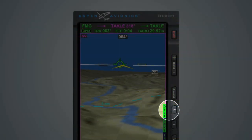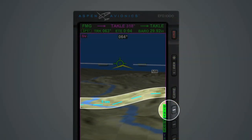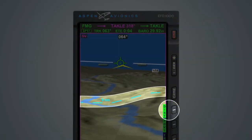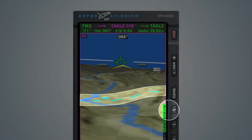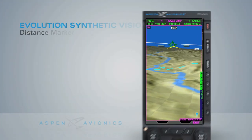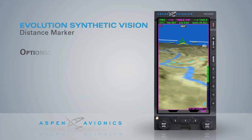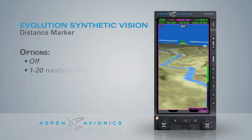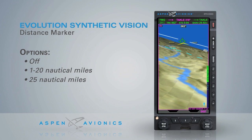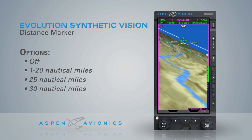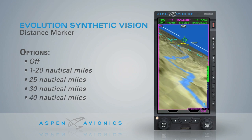The distance hotkey presents a cyan dashed line representing the ground distance ahead of the aircraft. The distance options are off, 1 through 20 nautical miles, 25, 30, and 40 nautical miles.